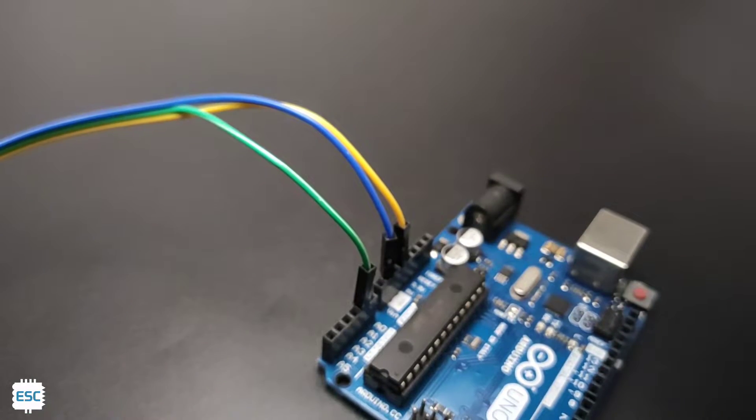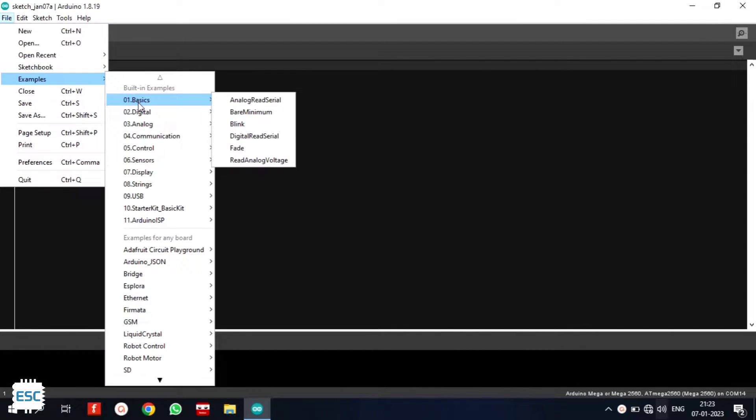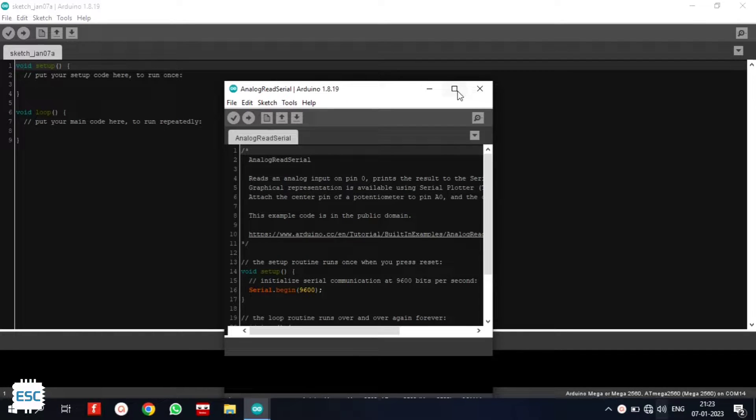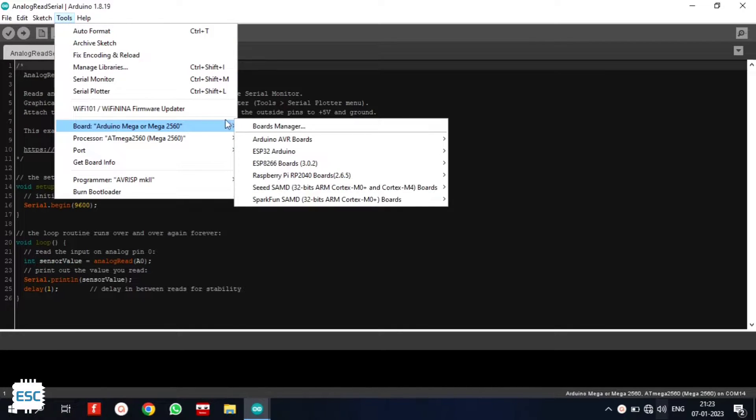Now connect the Arduino to computer and open Arduino IDE. Now go to File, Examples, Basics. Select the analog read serial code.